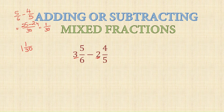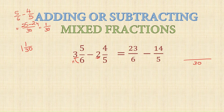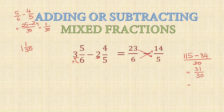Using the improper fraction method: convert the first mixed fraction to 23 upon 6 and the second to 14 upon 5. LCM is 30. Cross-products: 23 into 5 is 115, minus 6 into 14 is 84. Subtracting gives 31 upon 30. Converting back to a mixed fraction gives 1 and 1 upon 30 — the same answer as before, confirming both methods match.